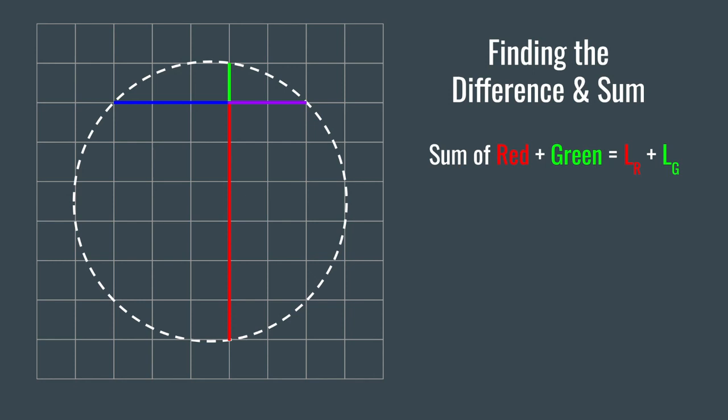Then, we can find the difference. The difference is simply the length of the red line segment minus the length of the green line segment. We can visually represent this by mirroring the green line segment to the other end of the red line segment, leaving us with this nice teal line segment as our final difference.